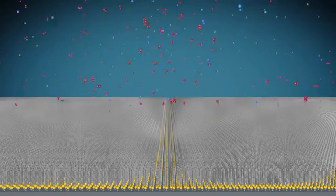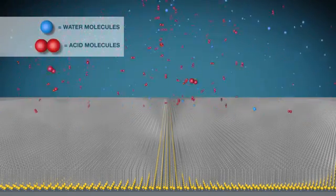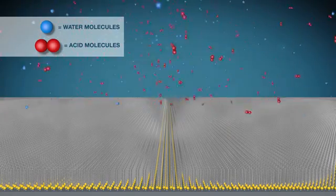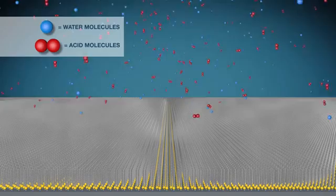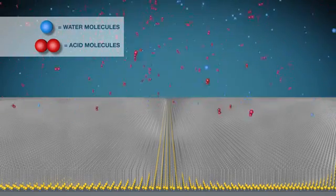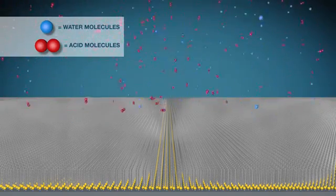The inhibitor molecules continue to stick until they form a tightly packed layer one molecule thick. The film provides a barrier against water and acids. If the water and acids cannot reach the surface, they cannot initiate rust.